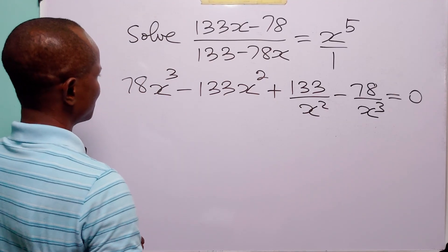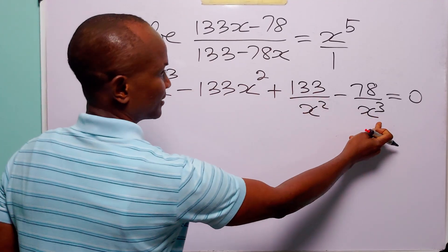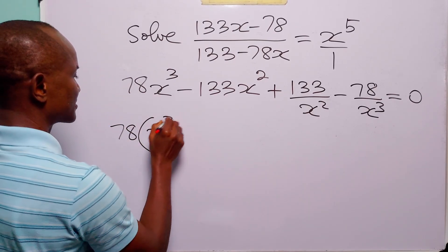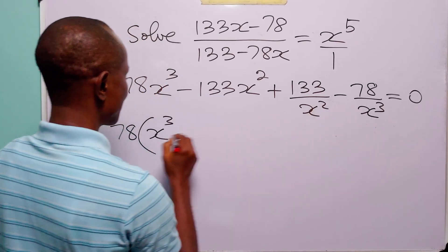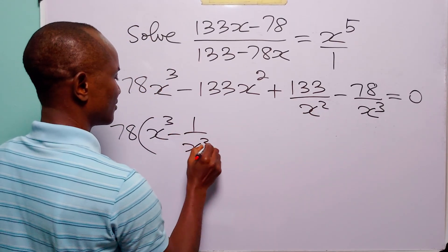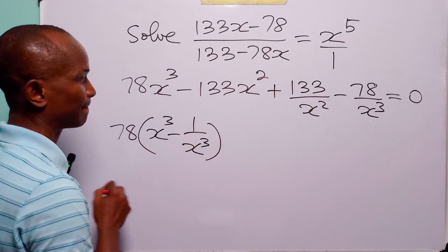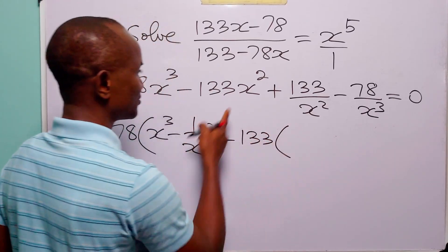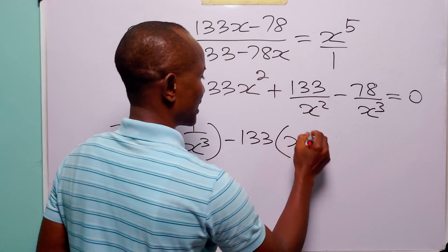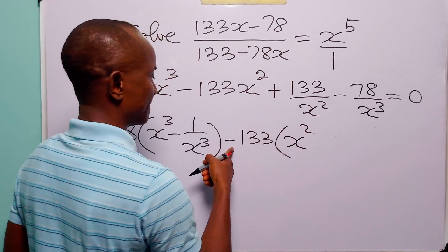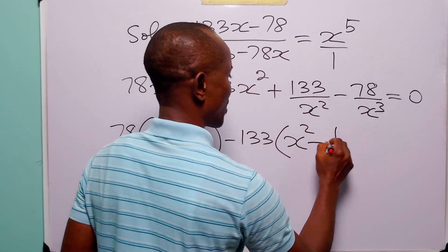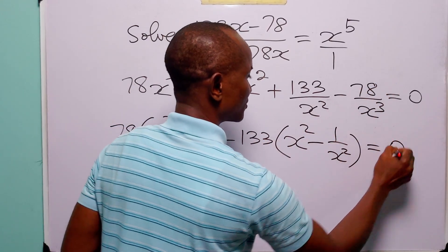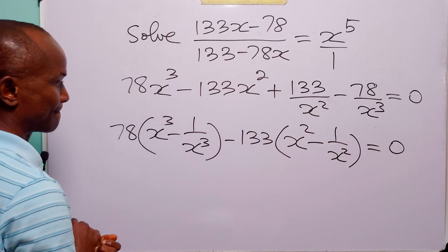Now let us collect like terms. We have 78 into x raised to the power 3 minus 1 over x raised to the power 3, then minus 133 into x squared minus 1 over x squared, and of course this is equal to 0.